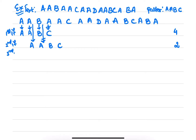Third iteration — pattern AABC. If you see here, this B doesn't match with this A. So one comparison.